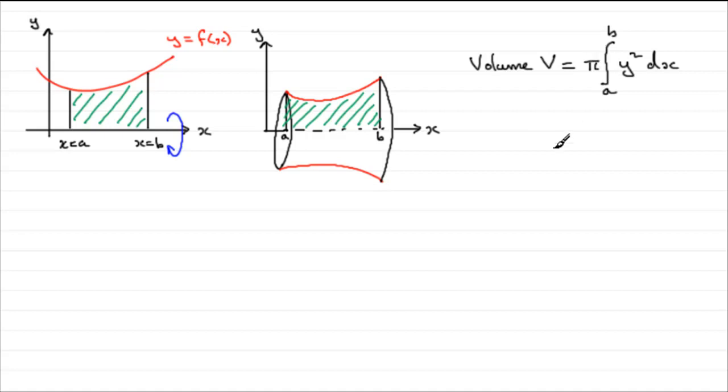You might see this represented in textbooks as volume V equals pi times the integral of f of x instead of y, some function of x. And that function of x is squared with respect to x. And our limits are from a to b.